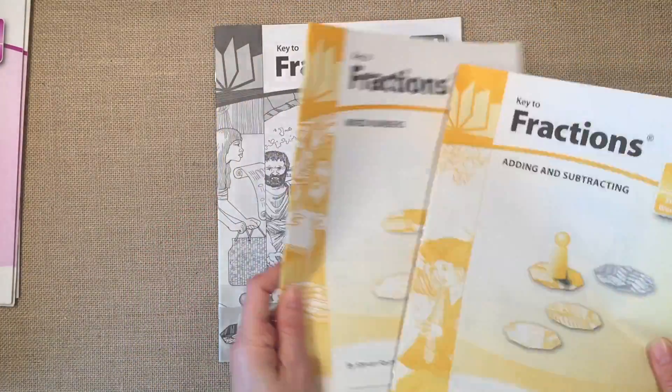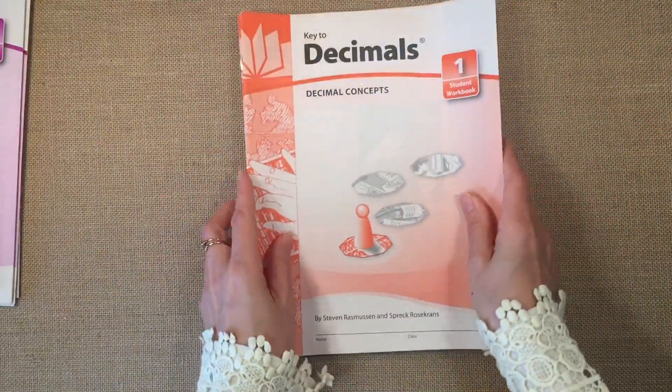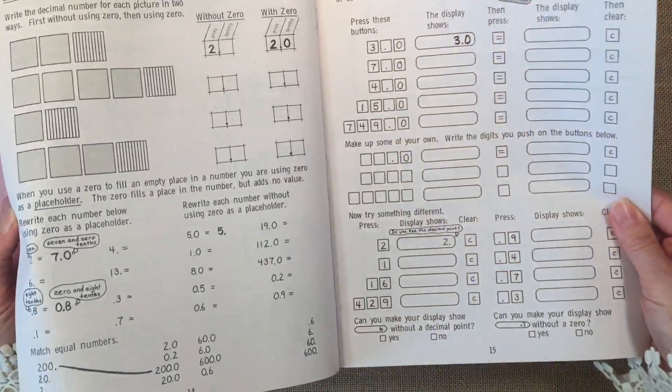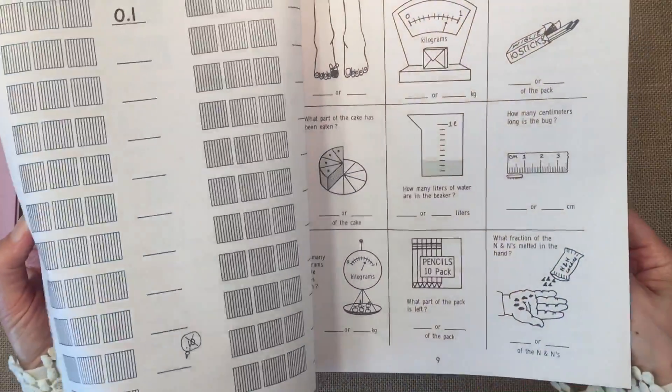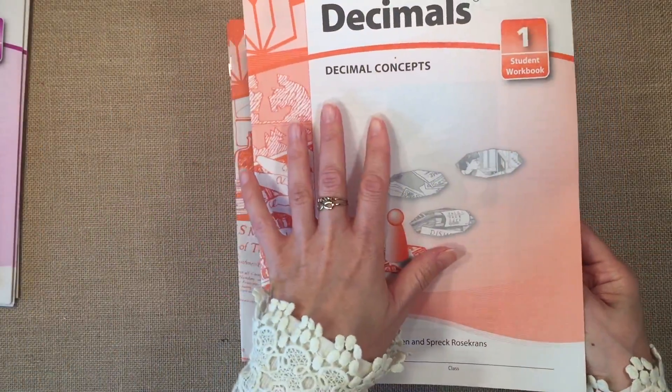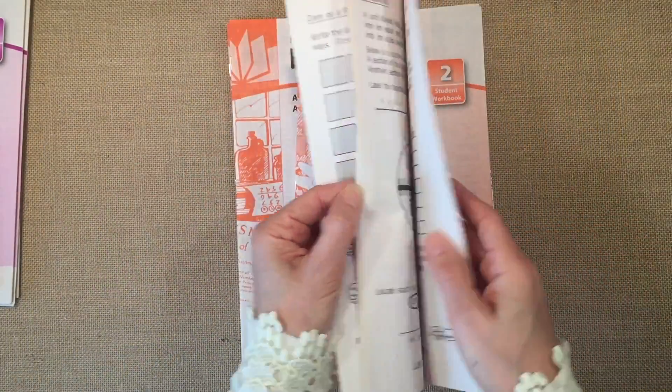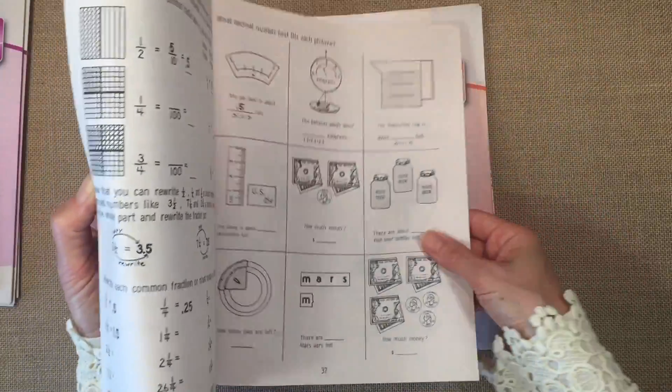And then there are mixed numbers. And of course, there's the answer key. When it comes to decimals, the workbooks go slow and steady when introducing these concepts. So this one is decimal concepts. Again, the workbooks are about 45 pages long.